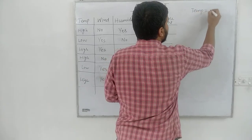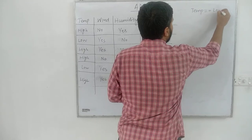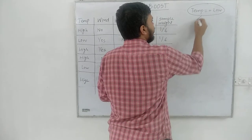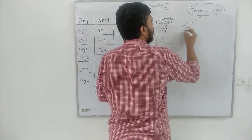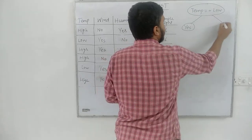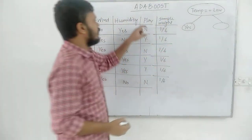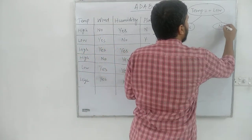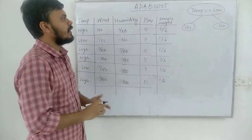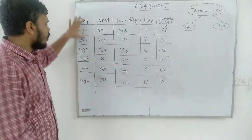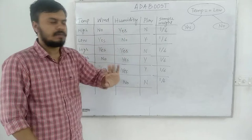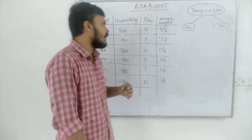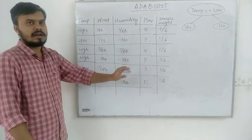For the temperature column, the criteria is: temperature equals low. If this is yes, then we say you can play. If this is no, we say you will not play. We decide on this column and look at the table to make our decision.